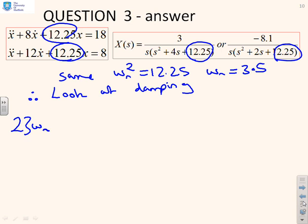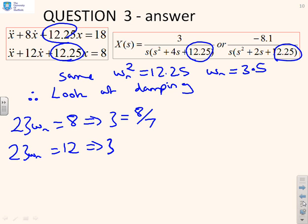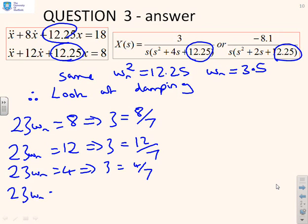we see we've got 2ζω_n equals 8, which implies that ζ equals 8 over 7. Or we've got 2ζω_n equals 12, which implies that ζ equals 12 over 7. Or we've got 2ζω_n equals 4, which gives you ζ equals 4 over 7. And finally, 2ζω_n equals 2, which gives you ζ equals 2 over 7.